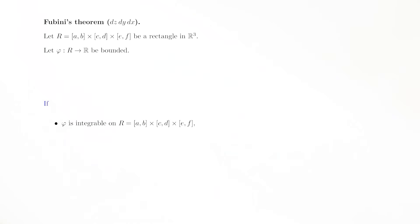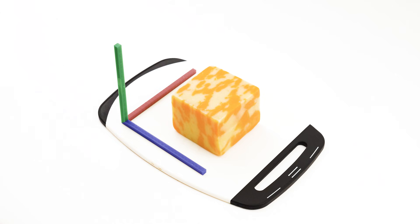The second assumption is about x-slices. For x in the interval from a to b, define the x-slice of phi to be the two-variable real-valued function with domain cd cross ef, which maps the point y, z to the real number phi of x, y, z. Each fixed value of x gives a new two-variable function, so there are infinitely many x-slices of phi. Now, Fubini's theorem also assumes that every x-slice of phi is integrable. How does this relate to the cheese?